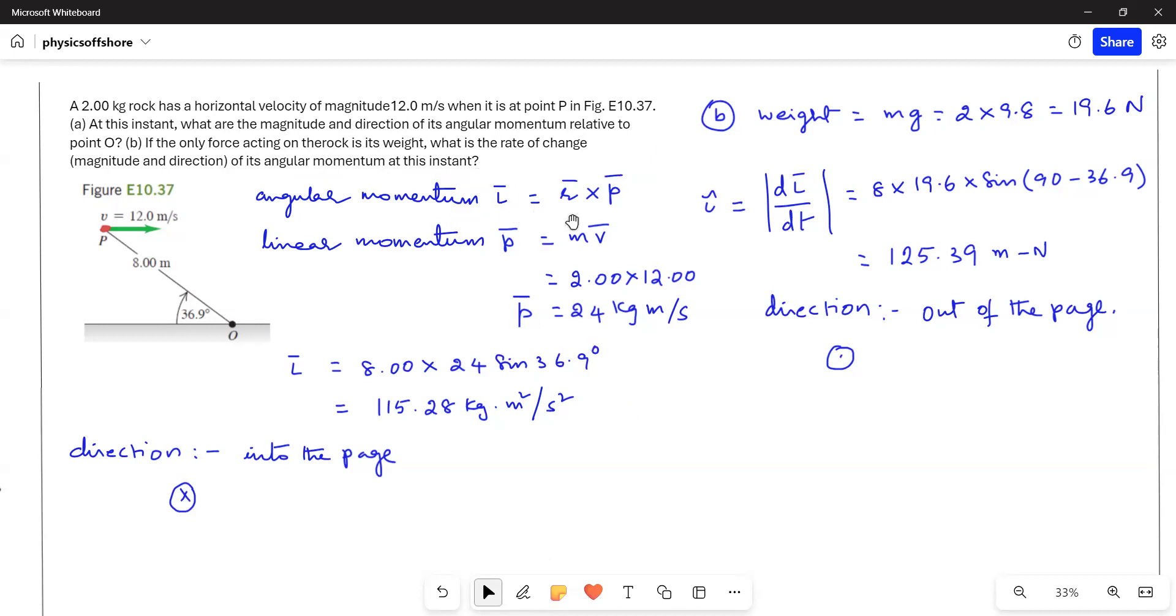The angular momentum L is equal to r cross p, where p is the linear momentum. Linear momentum is mass times velocity. Mass is 2 kg and velocity is 12 m/s, so p equals 24 kg·m/s.